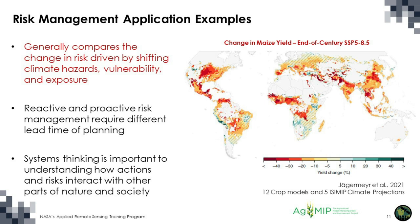When looking at risk management applications, we are generally comparing the change in risk driven by shifting climate hazards, vulnerability, and exposure over time. An ensemble of 12 crop models and five climate projections from the ISIMIP project shows decreasing yields toward the end of century under the very high emission scenario SSP5-8.5. This type of shifting risk allows stakeholders in the agricultural sector to start thinking about how to react and be proactive about these shifting risks going into the future.